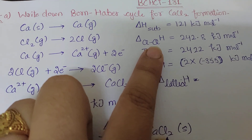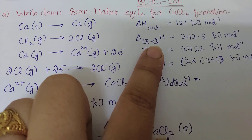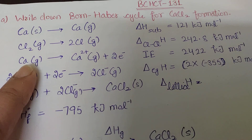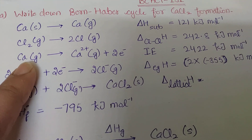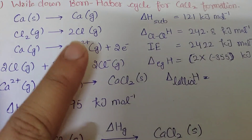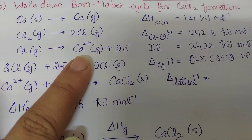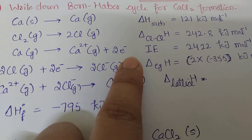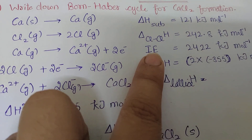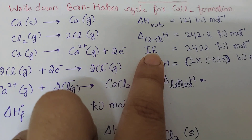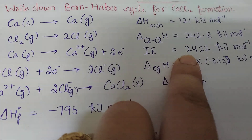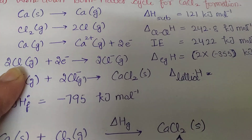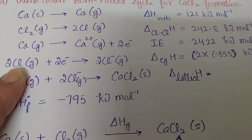The sublimated calcium in gaseous form is now converted into its ionic form — that is Ca²⁺ — by losing two electrons. Because it is ionized, this energy is known as ionization energy, with a value of about 2500 kilojoules per mole. Chlorine then gets ionized to form the chloride ion in anionic form.